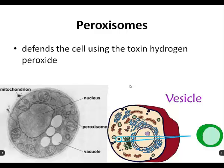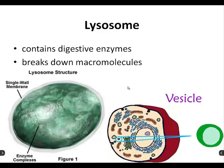Lysosomes — also very similar to vesicles. They contain digestive enzymes for breaking down macromolecules. Instead of hydrogen peroxide on the inside, they've got breakdown enzymes. The word 'lyse' actually means to break, so these are the breaking organelles. They look very much like vesicles and sometimes hook up to vesicles, consume them, or are made out of a vesicle. By the way, these are my favorite, so you should put that one in the middle of your bingo board — I pretty much call it every time.